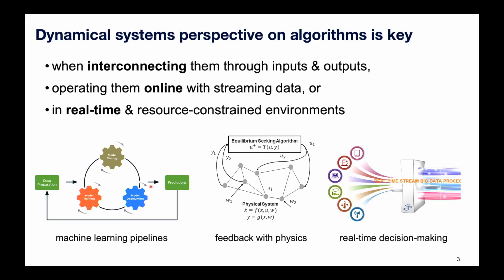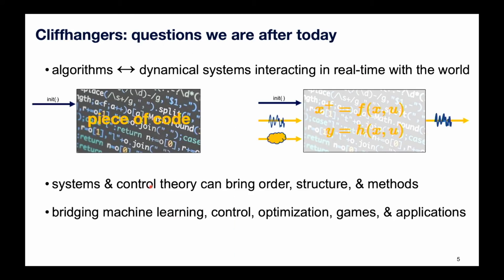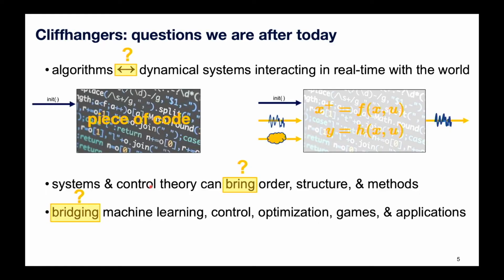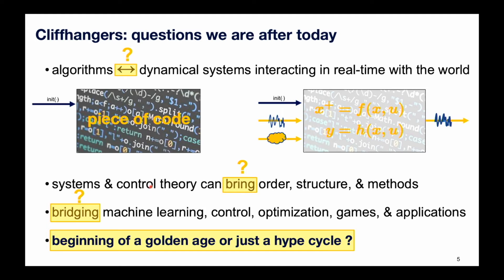This offers an opportunity for people from different communities — machine learning, optimization, control, and games — as well as application domains to come together. The hope is that whenever you see pictures that look very much like a feedback loop but nobody analyzes them as such, the tools from systems theory and controls can bring some structure to problems that are currently a bit the wild west. Provocatively: is this the beginning of a golden age where you can apply decades of experience from one community to contemporary problems, or is this just a short-lived hype cycle?